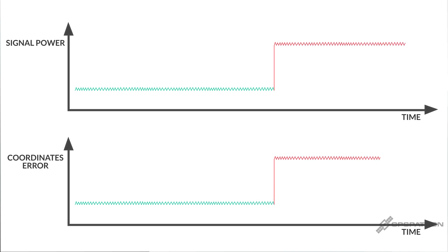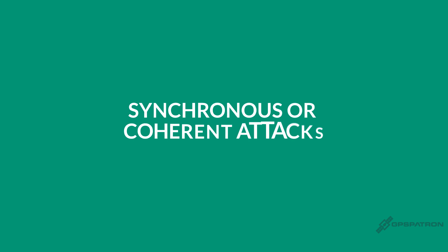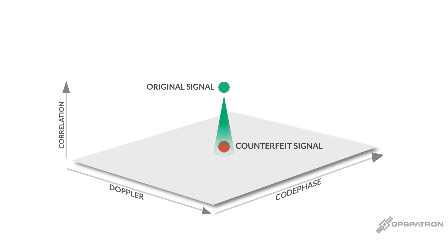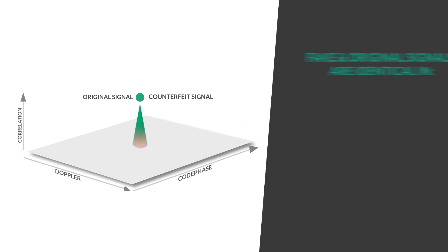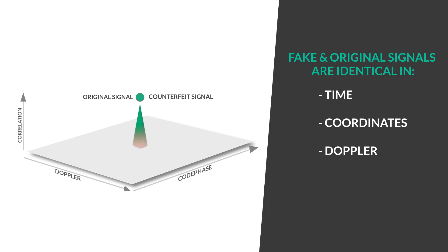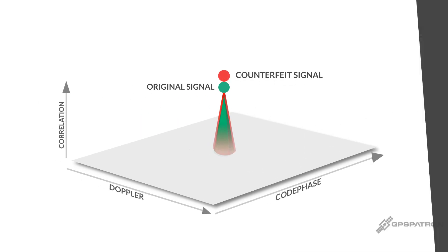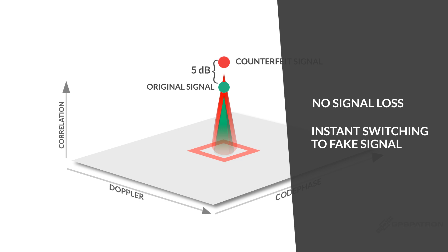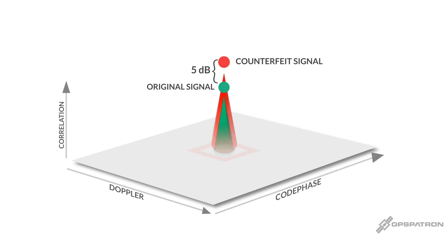Synchronous attacks, in contrast, are multifaceted and costlier to execute. As the first step, an attacker generates signals identical to the genuine one in time, coordinates, doppler, and pseudo range. As a result, instead of losing tracking and switching to search mode, the receiver switches to the imitation signals with no errors or interruptions. Afterward, the spoofer can smoothly move coordinates, time, or both.